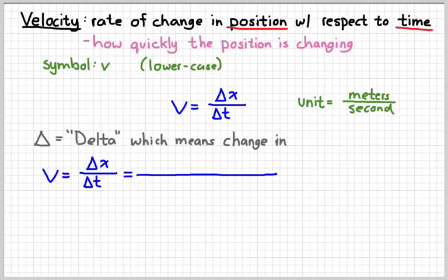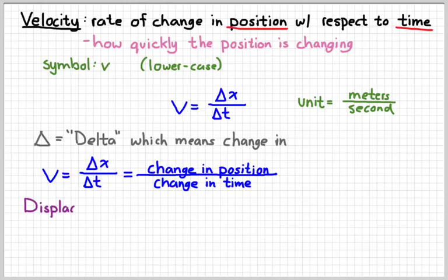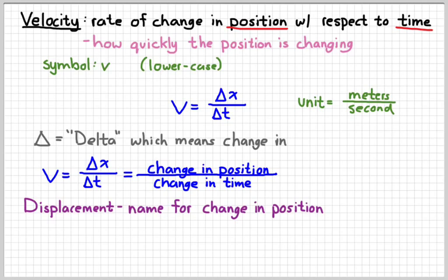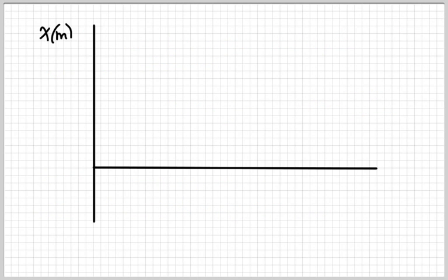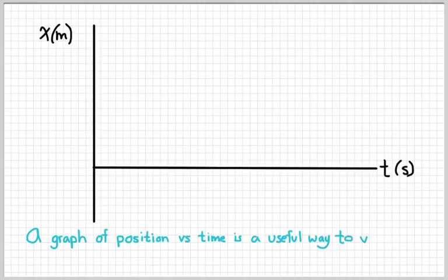To write this out in words: delta x represents change in position, and delta t represents change in time. The word displacement is a name we give for change in position, so you can use either term interchangeably. A position versus time graph, like we made in class with the bowling ball, is very useful for visualizing motion and for writing equations to describe motion.